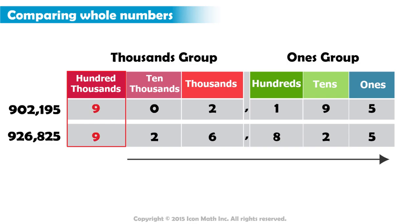In both numbers, we have 9. The digits are equal, so we have to compare the digits in the next highest place value. We move to the ten thousands.